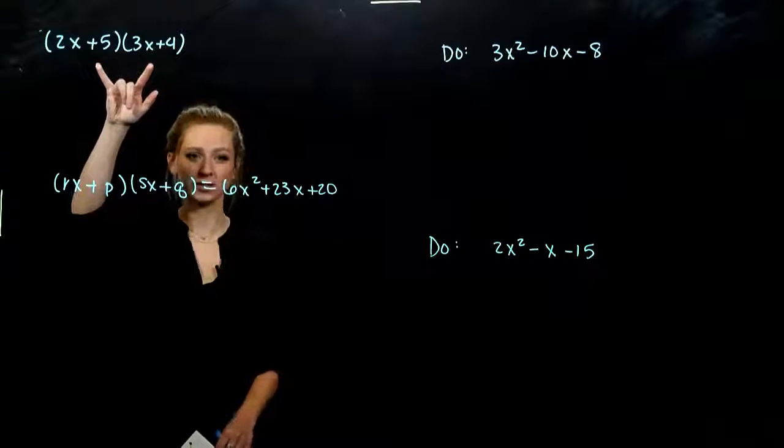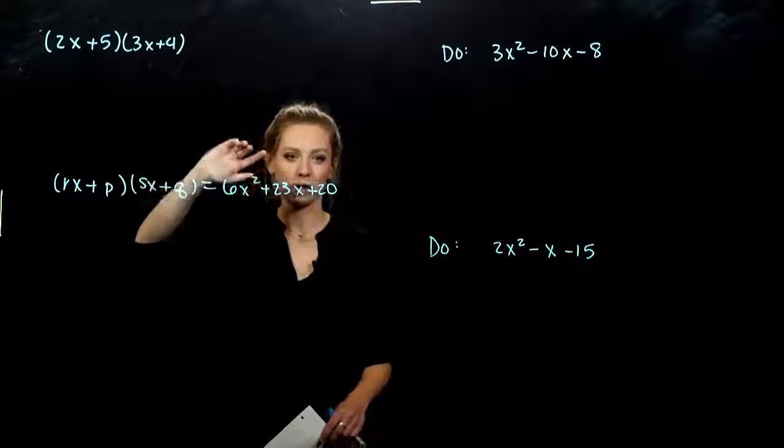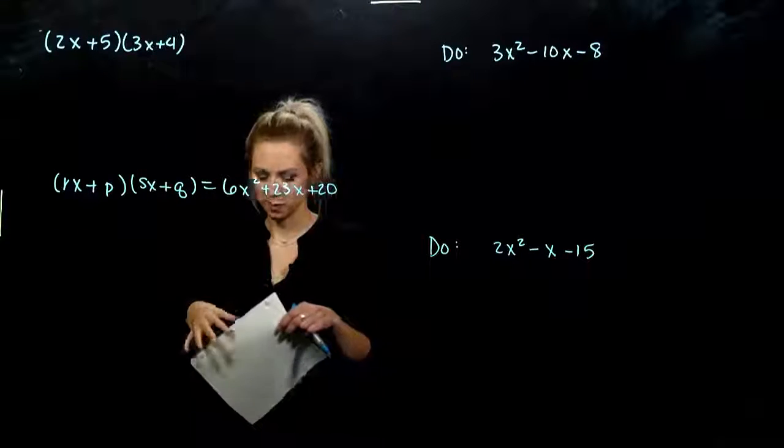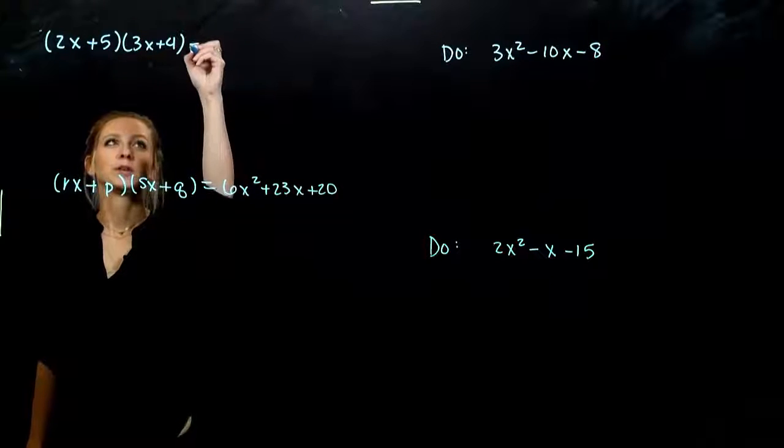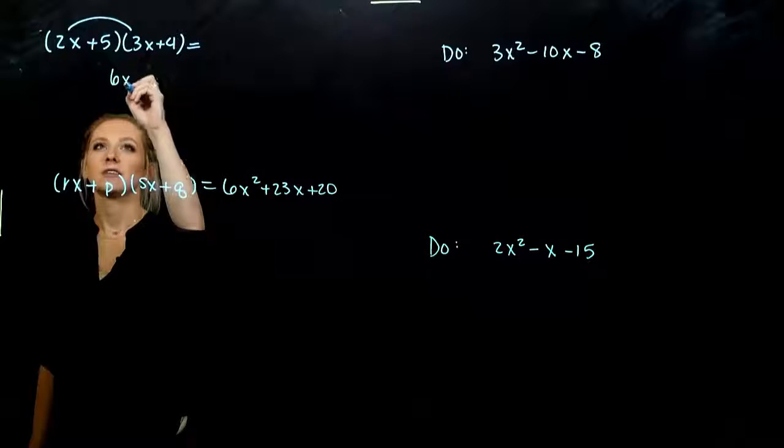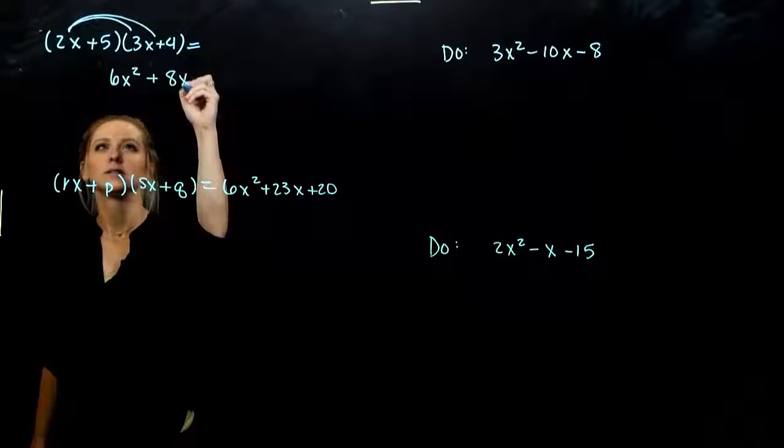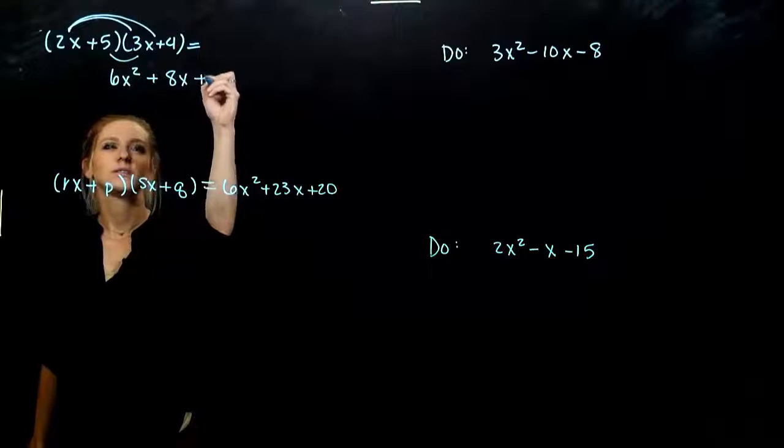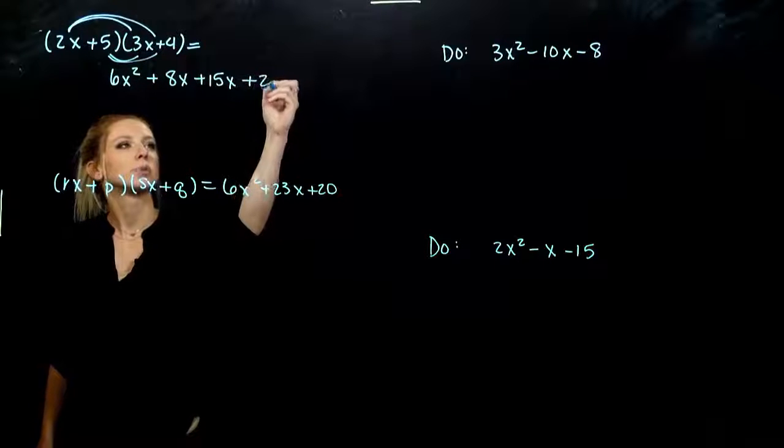But for the guessing and checking, we'll take a peek. So we're going to work backwards, first of all. I have two factors here and we are going to FOIL it out just to see what kind of combo we get. When we do first, I get 6x squared. Outer will give us 8x. Inner, plus 15x. And last, we get plus 20.